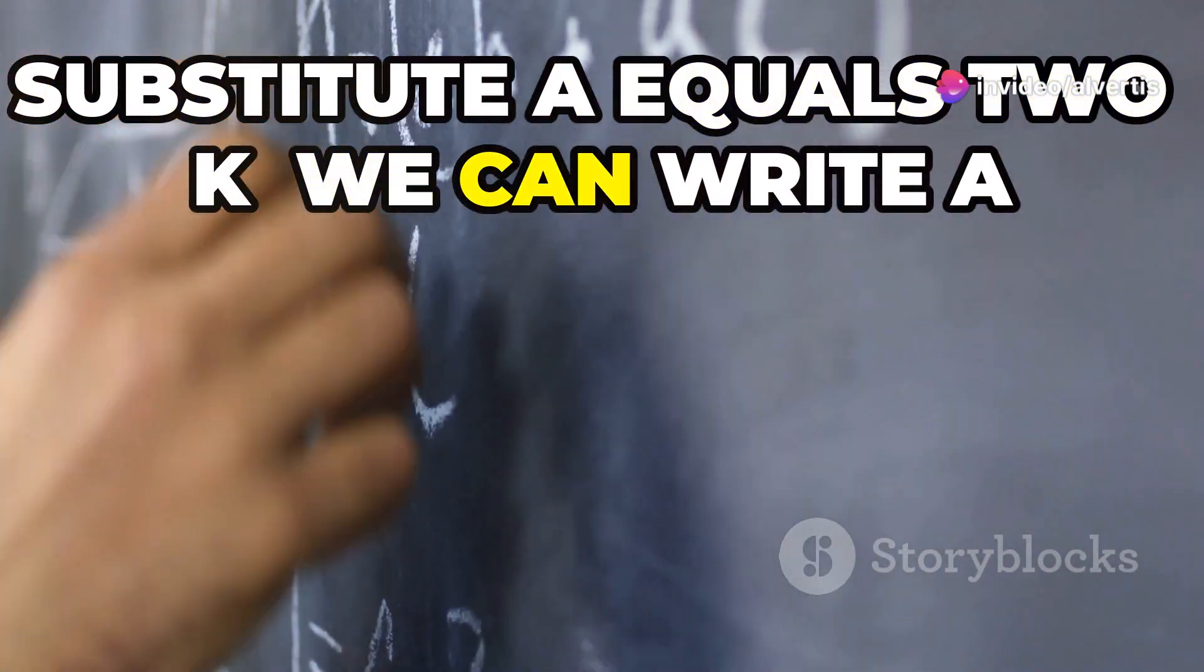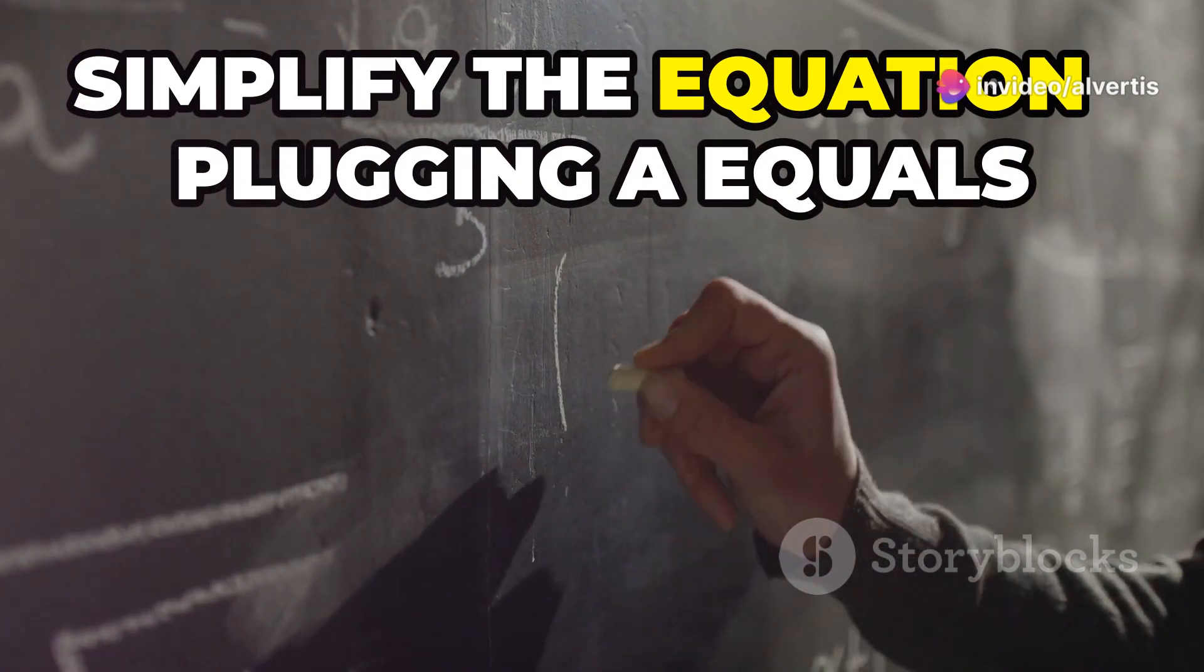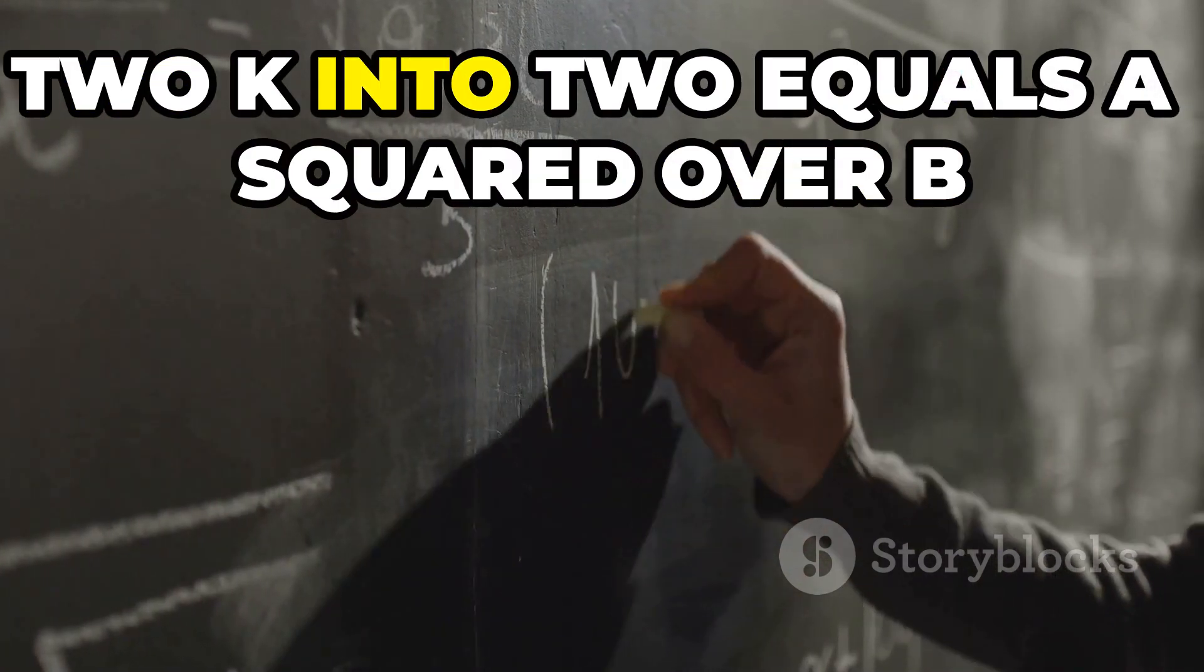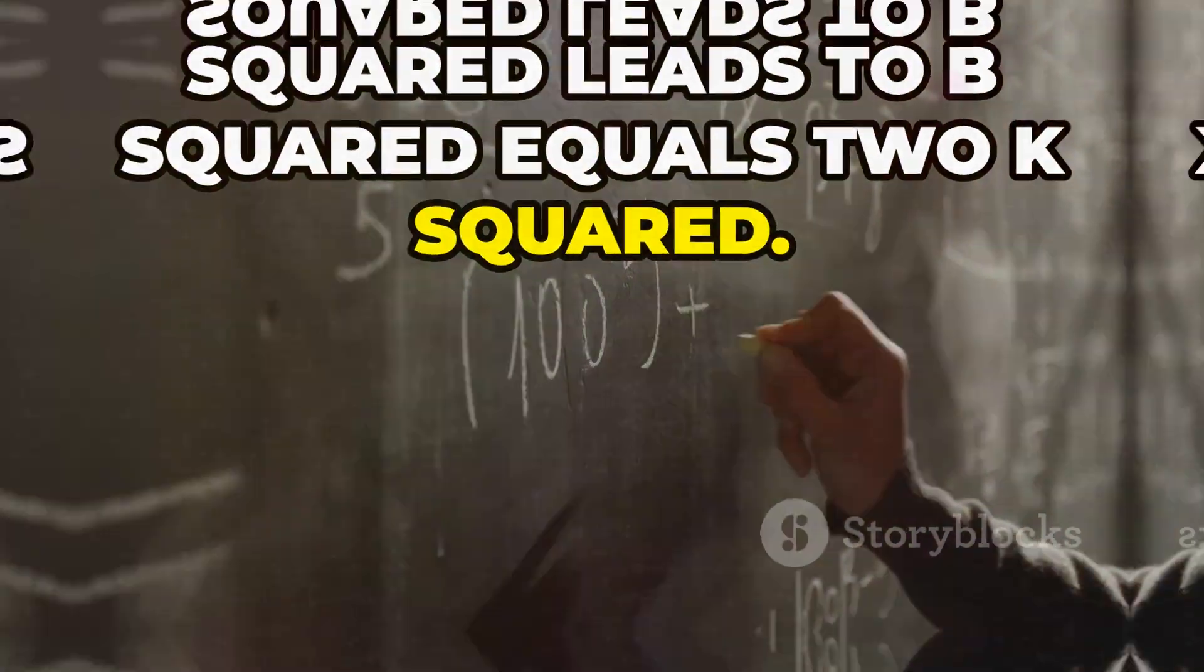Substitute a equals 2k. We can write a as 2k, where k is another integer. Simplify the equation. Plugging a equals 2k into 2 equals a squared over b squared leads to b squared equals 2k squared.